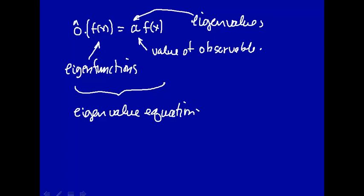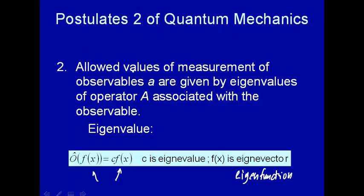This eigenvalue equation will give you only the possible values that you can measure for an observable. That's postulate two. We have two more to go.